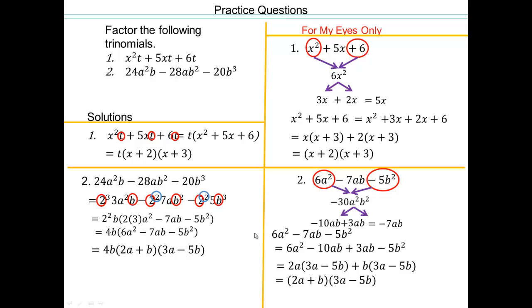That's all there is to factoring — it's really not that difficult. You just have to practice enough to start seeing the numbers. The harder part where people get stuck is finding two numbers that multiply to one value and add to another, but with enough practice you'll see it in your head. Does the order of the factors matter? No, because multiplication is commutative.